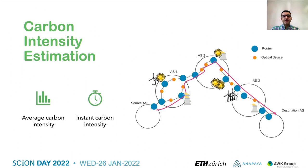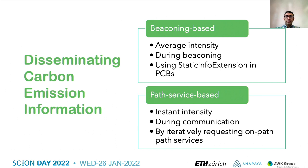In each AS, the system computes the average carbon intensity of intra-domain paths between any border router pairs of the AS using the distance between them, the whole carbon emission of the AS, and the amount of traffic transited between them in a time interval. The system also monitors the instant carbon intensity of these paths using the instant electricity mix, energy efficiency, and traffic load of every device on the path between each border router pair.